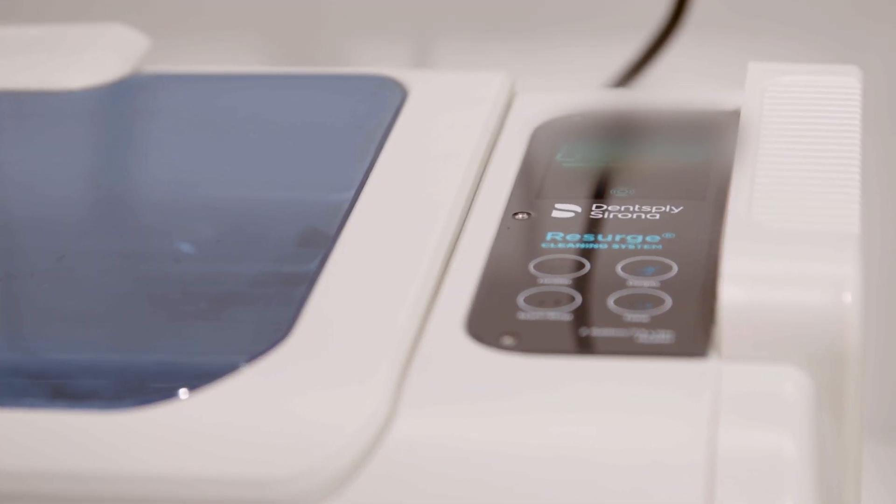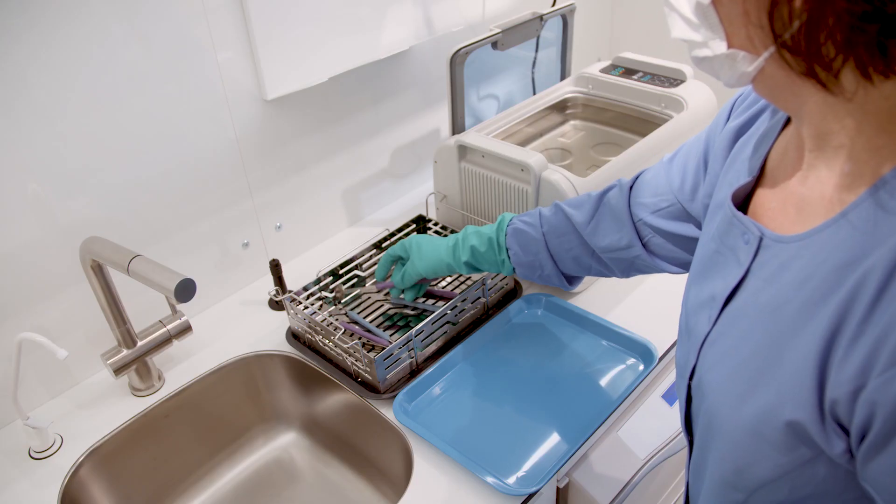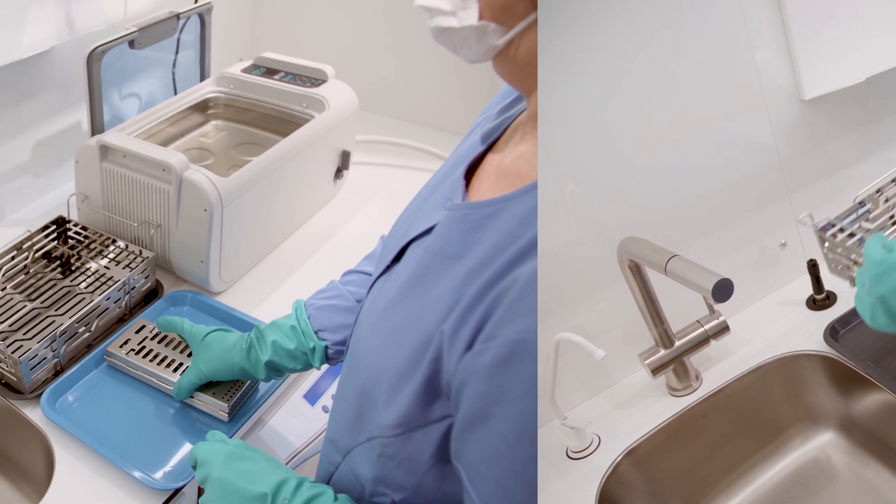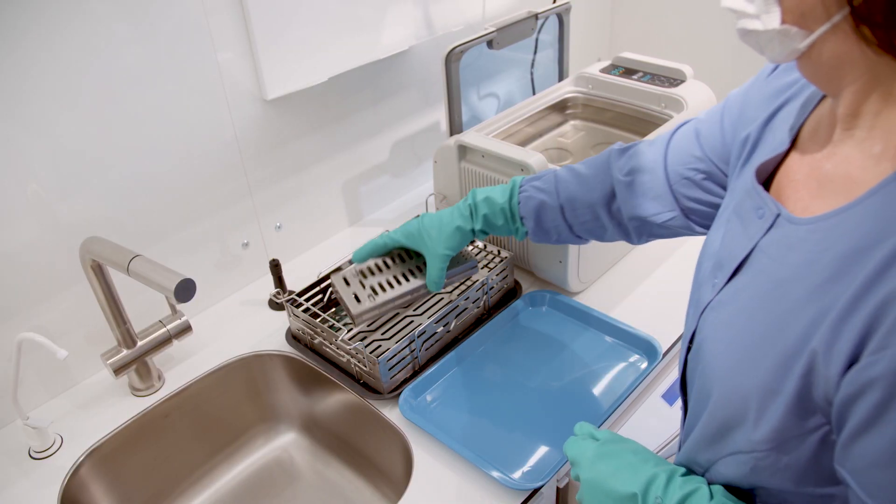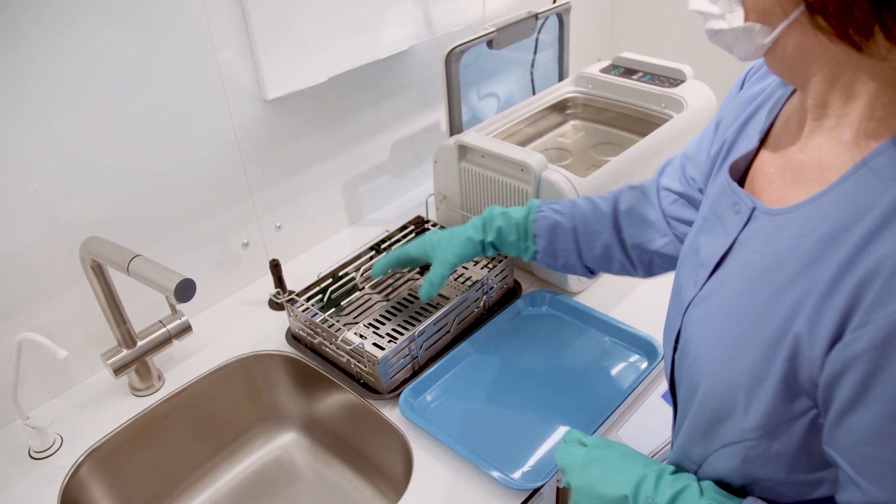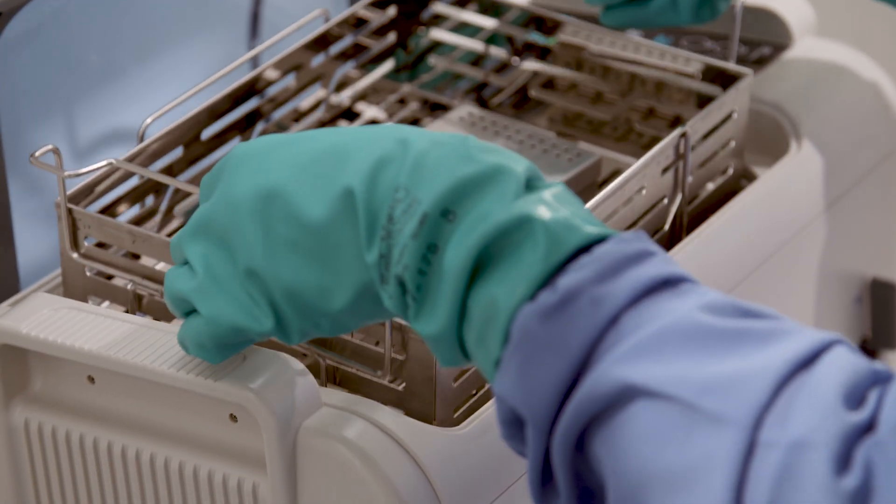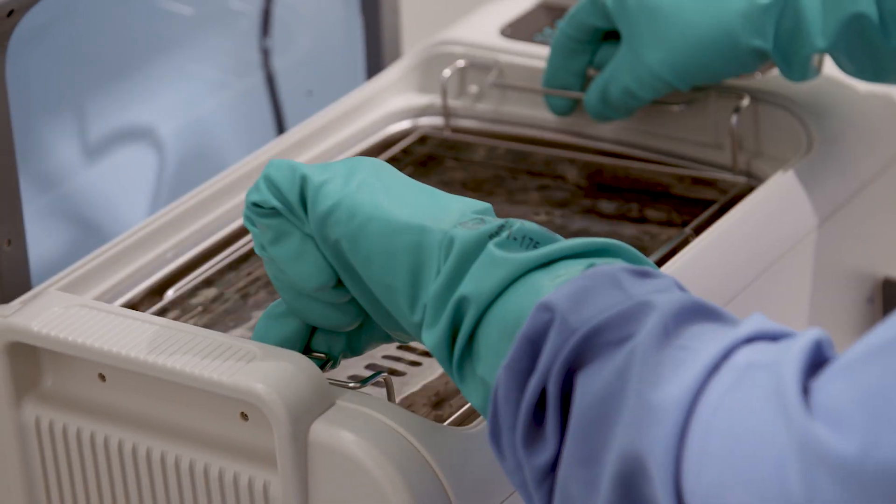Once the degas function completes, remove the lid and place loose instruments into the basket or stackable trays in a single layer. If using cassettes, place them directly into the universal rack. Lower the universal rack containing the basket, stackable trays or cassettes into the bath and close the lid.